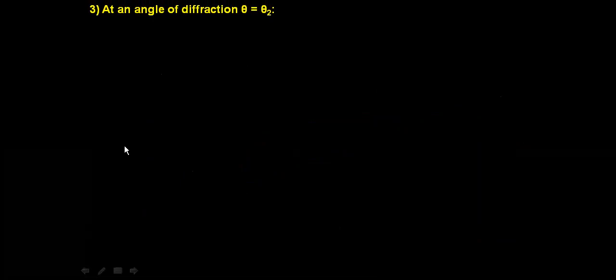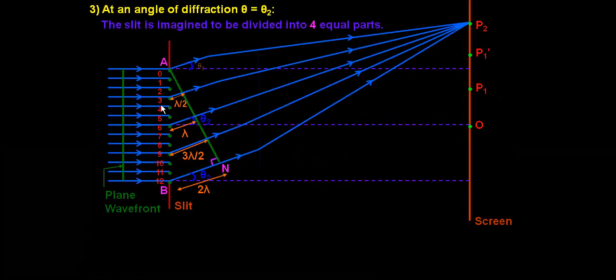At an angle of diffraction theta equal to theta 2, the slit is imagined to be divided into four equal parts. The upper half will have points such that rays from them have path difference lambda by 2 with rays from the lower half. Hence we will again have minima at point P2.